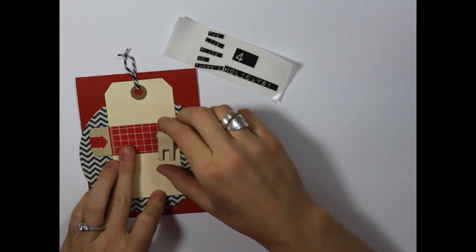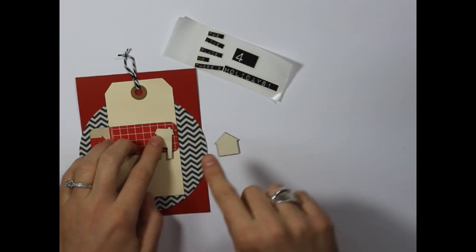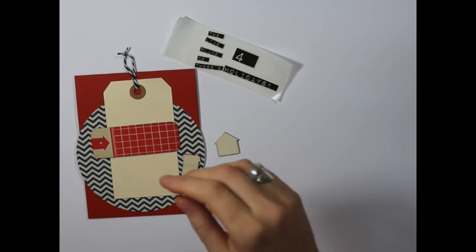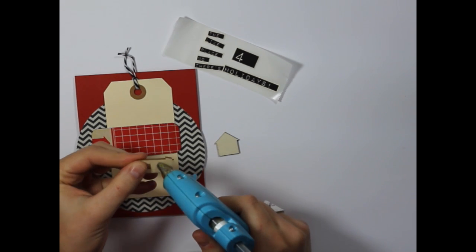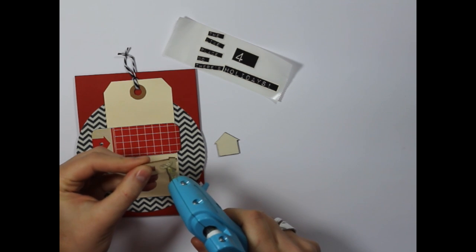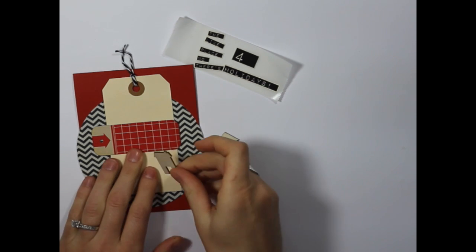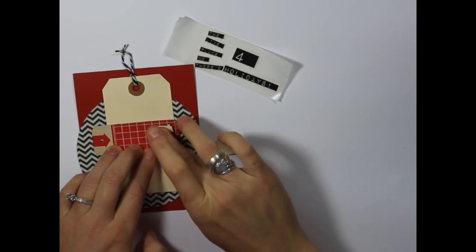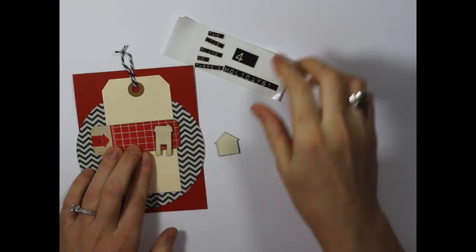So what I want to do is adhere this taller house onto my chipboard tag. You can do this lots of different ways. I'm just going to put a little hot glue on the back. And you can hear that right there.